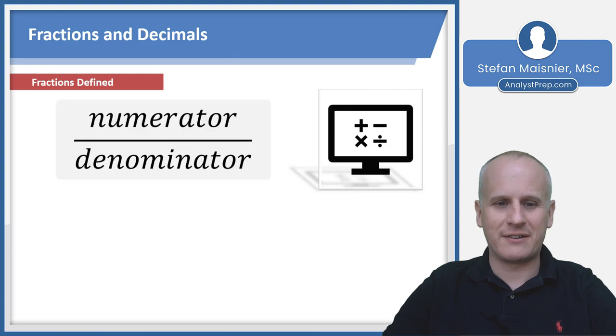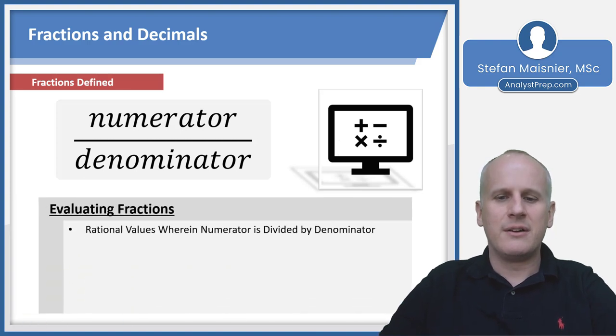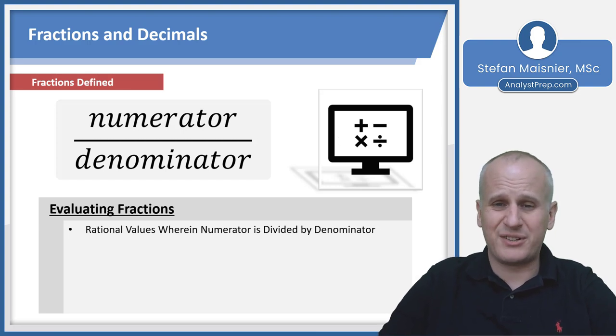Let's start by defining fractions. The top of the fraction bar is the numerator, and the bottom is the denominator. Rational values occur when you have a numerator divided by a denominator. Anything that can be articulated as a fraction is a rational value.